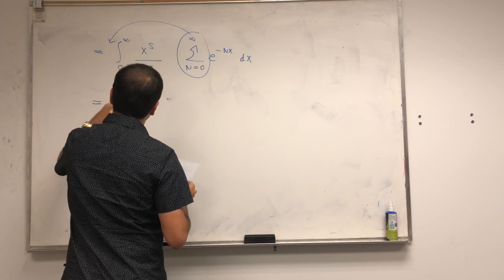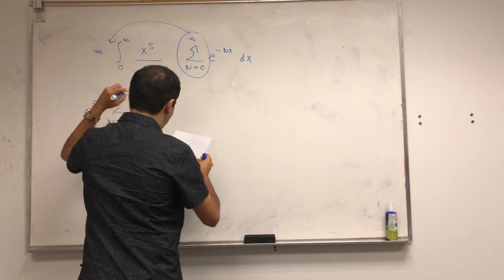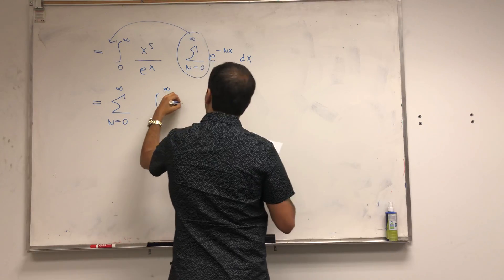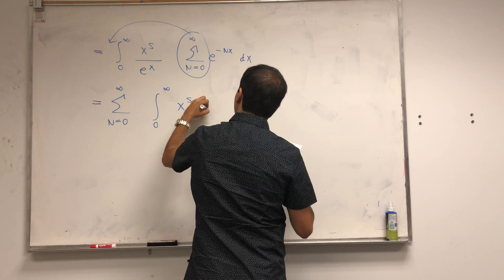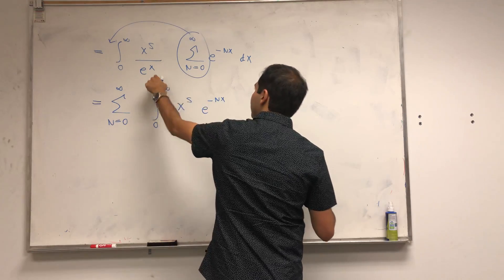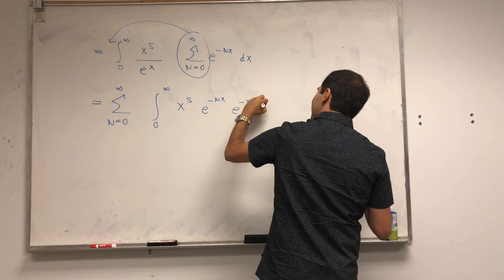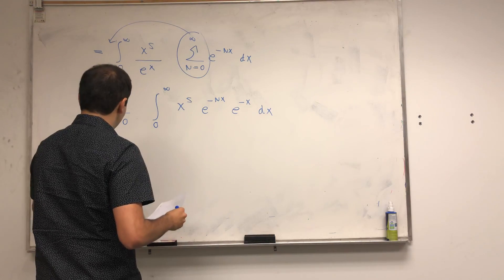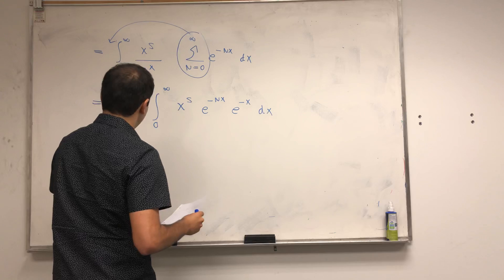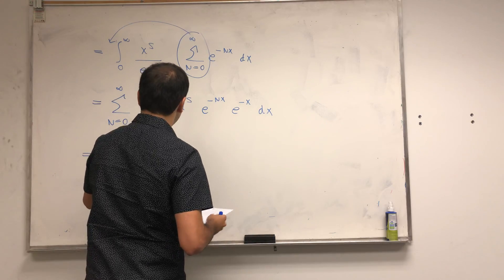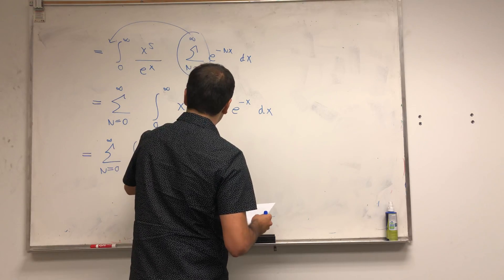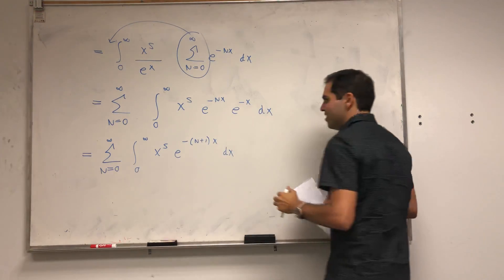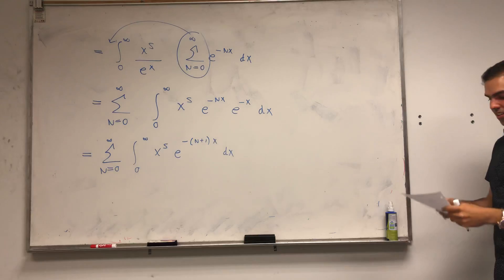So sum from 0 to infinity of integral from 0 to infinity of x to the s, e to the minus n plus 1 times x, which I'll write as e to the minus x. And that's the same thing as sum from 0 to infinity, integral from 0 to infinity of x to the s.